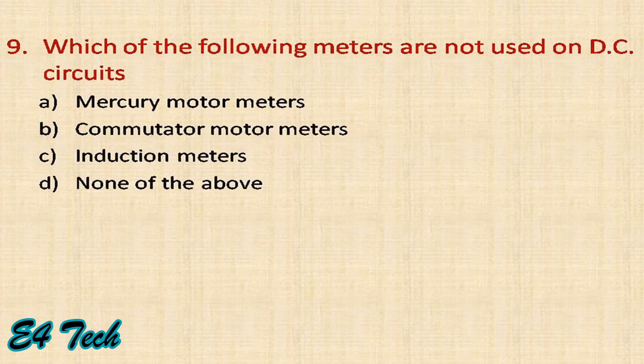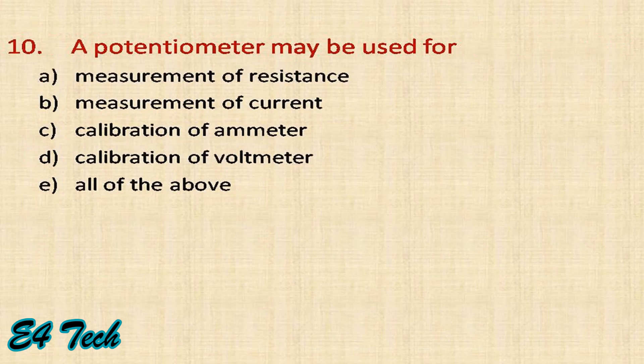Which of the following meters are not used for DC circuits? Mercury motor meters and commutator motor meters can be used for DC, but induction meters operate on the induction principle, which is related to alternating quantities. Therefore, the meters that cannot be used in DC circuits are induction meters.